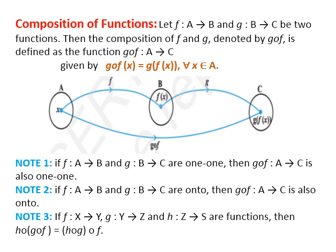Now there are some important points to remember. First: if f from A to B and g from B to C are one-one — we learned about one-one functions in the previous video — then gof from A to C is also one-one. Second point: if f from A to B and g from B to C are onto, then gof from A to C is also onto.